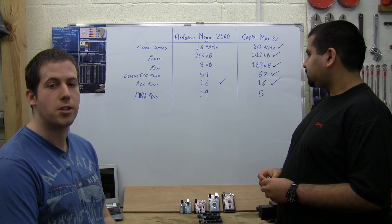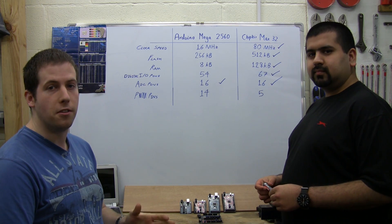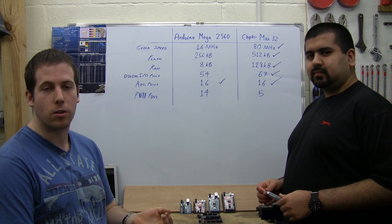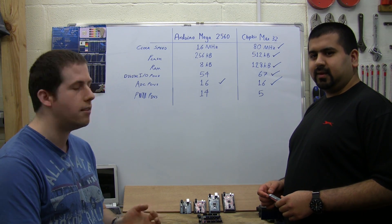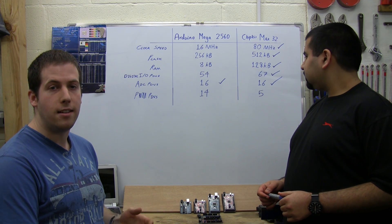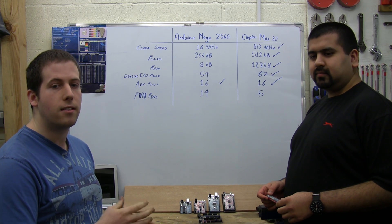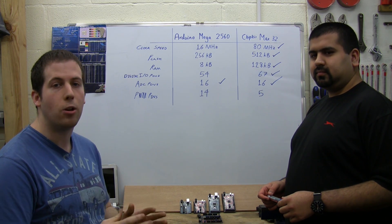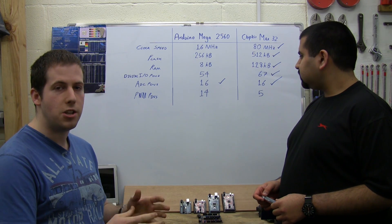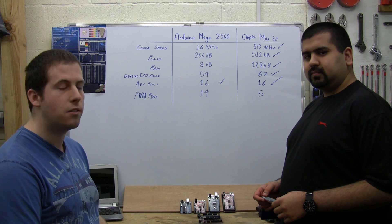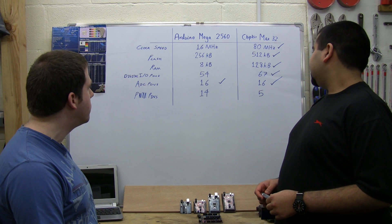The next lot of pins are pulse width modulation pins, or PWM pins. These do dual functions - they're used to control analog loads in a rather efficient way. Things like motors and LEDs are very useful to run off PWM pins. On both development platforms, these are also used as analog outputs, so with a bit of smoothing using a resistor and capacitor, you can actually get an analog voltage out of these pins. The Arduino has 14 PWM pins and the chip kit has 5 pins.